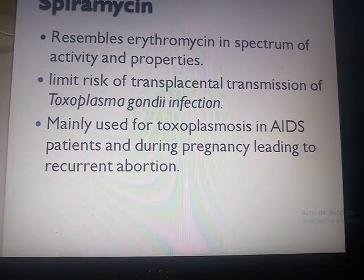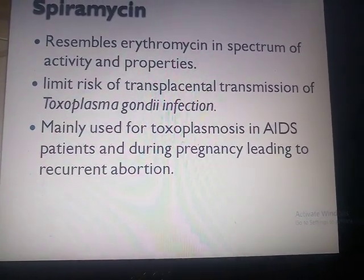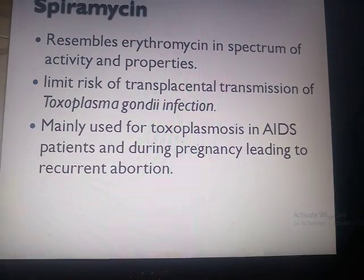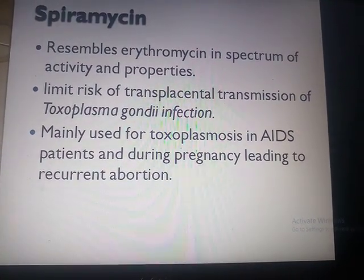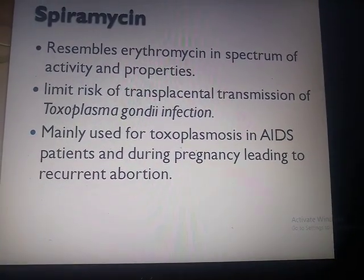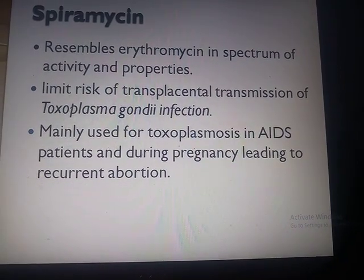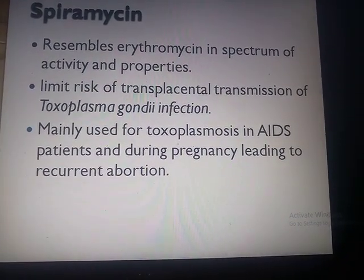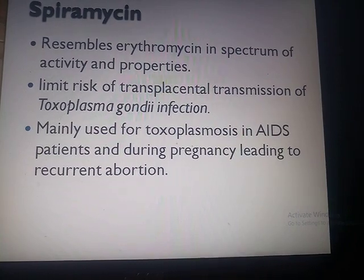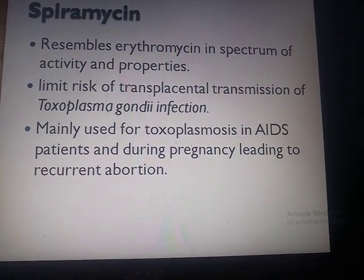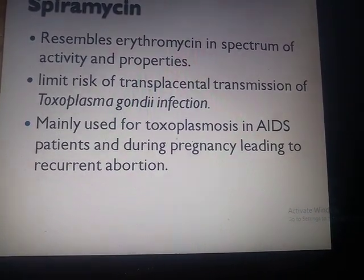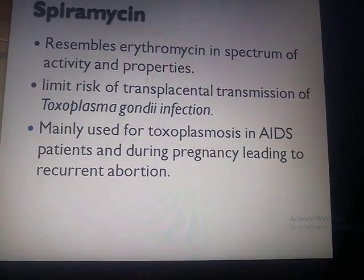Spiramycin resembles erythromycin in spectrum of activity and properties. Its main indication is limiting the risk of transplacental transmission of Toxoplasma gondii infection. It is mainly used for toxoplasmosis in AIDS patients and during pregnancy where it prevents recurrent abortion. This concludes the discussion on macrolides.